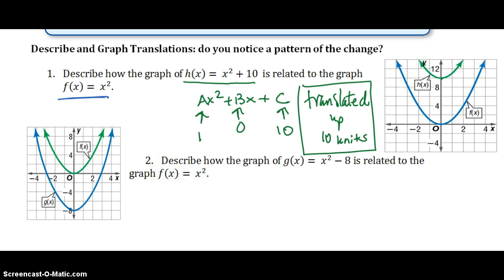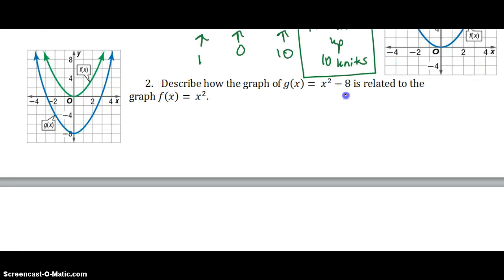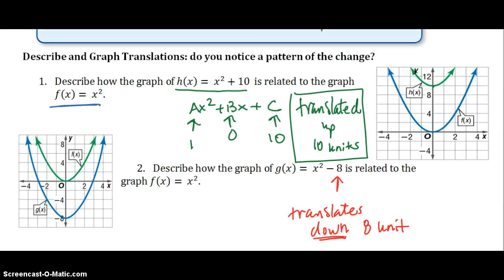So take a second and look at number 2. I will tell you the answer, but see if you can figure out the answer first. Because our c is a negative 8, it's going to translate down 8 units. So it is our c value that tells us how to translate.